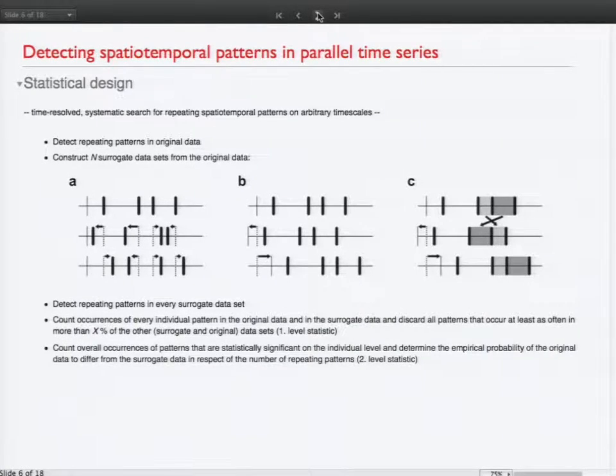So what would we need to do? So we have some original data. And we look in a time resolved, systematic manner, look for repeating spatial temporal patterns on arbitrary timescales. So this is the variable that is in the analysis. And detect repeating patterns first in the original data. Now, the patterns that we find, no one knows in the beginning if they appear randomly or not. So if there's any meaning in these patterns that do repeat. So we need some baseline for this, some statistical model. And the problem is that the single spike train, or the intervals between events in a single spike train, do not have any distribution that would be known. So you can approximate this with a gamma distribution, for example, but it's not precisely a gamma distribution. So there's no analytical way to solve this.